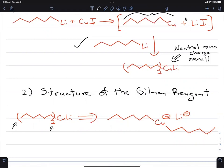So overall, we end up with a species that's minus one, as shown here. And as a result, we need the lithium to act as a counter ion. So when you think of the Gilman reagent, when you think of that reagent, we want you to think of this.